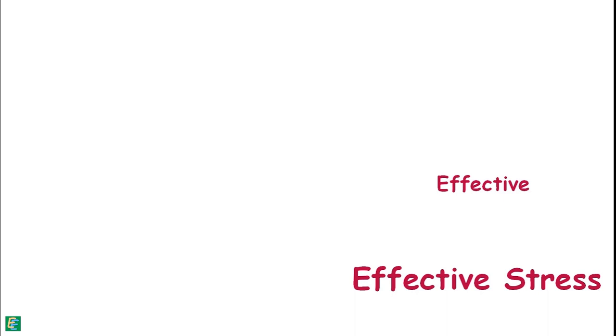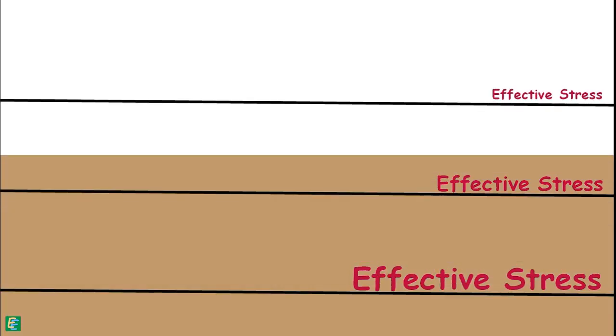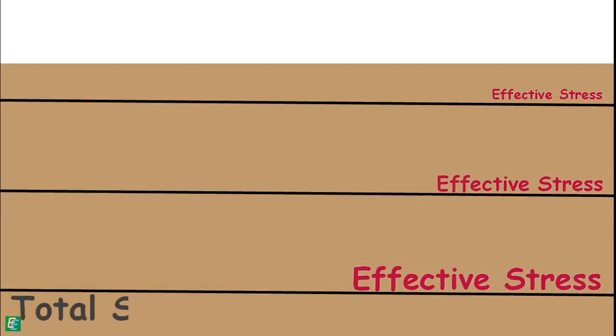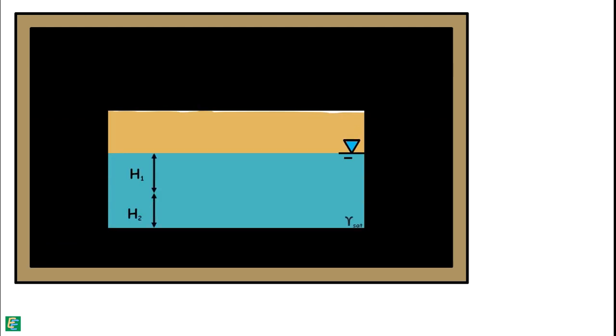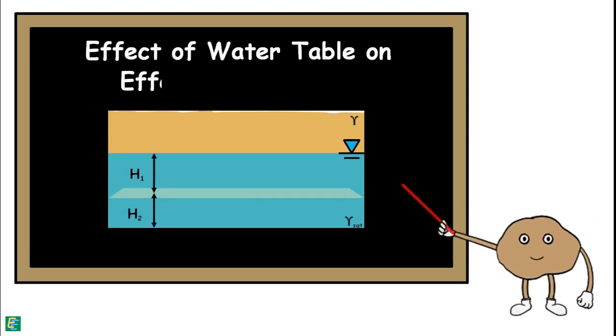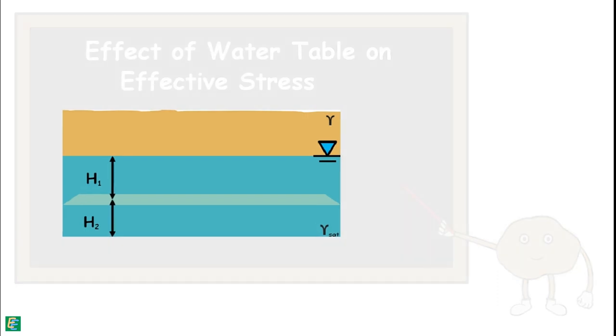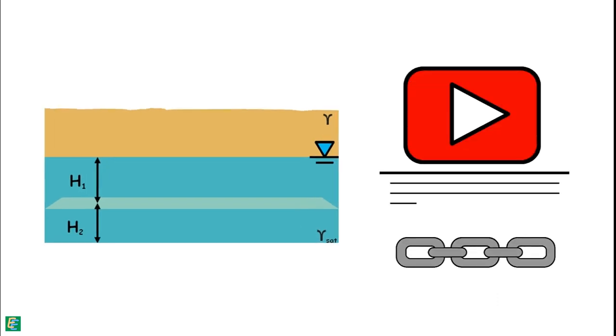Effective stress is different at different depths below the ground surface because total stress and pore water pressure change at different depths. We have already discussed the effect of variation of water table on effective stress. Link to that video is in the description.